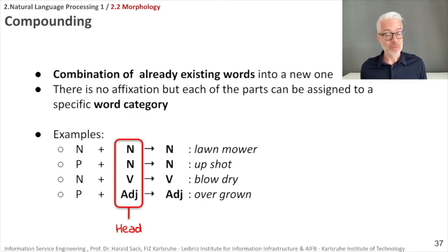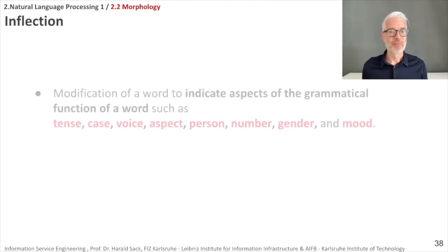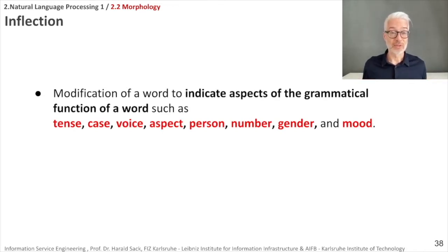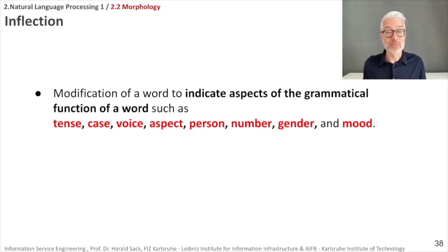The third rule, besides derivation and compounding, is inflection. With inflection, you modify a word to indicate specific aspects of its grammatical function, such as tense — past, present, or future. Inflection can also express different cases, voices, aspects, persons, numbers, genders, or moods.